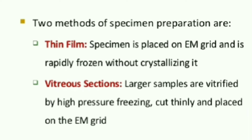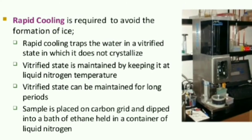In the vitreous section method, a larger specimen is vitrified by high pressure freezing — that is, freezing under higher pressure conditions — and it is then cut thinly and placed on an EM grid. We know that when we keep a substance in a freezer, ice formation easily takes place.